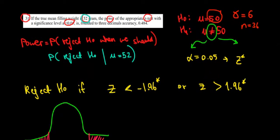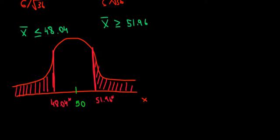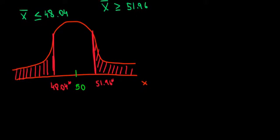If we go to our last distribution that we drew, we saw that this would be the rejection region assuming that the mean of the population is 50. But now, with the new information that the actual mean of the population is 52, the mean of the population would be somewhere over here — this would be 52, slightly to the right of 51.96.